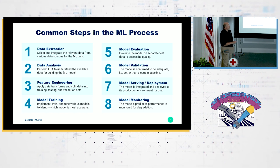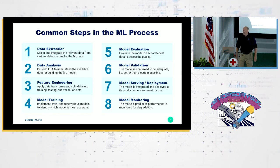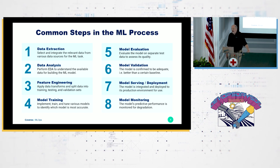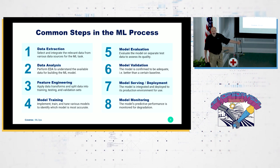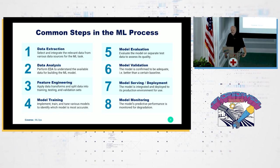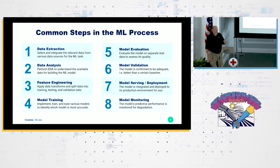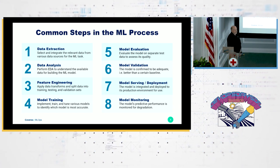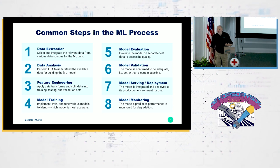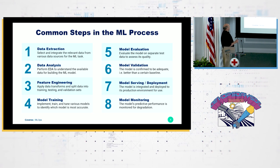Step one is to figure out what data is out there that you need to process, analyze, and make predictions around in the machine learning model you're going to build. This is usually done by data scientists and data engineers. That could be internal data, customer data, external data in the cloud, image or natural language databases, or real-time feeds from stock market or weather APIs. Your goal is to figure out the data sources you'll see in production so you can train a model to make predictions against that data.